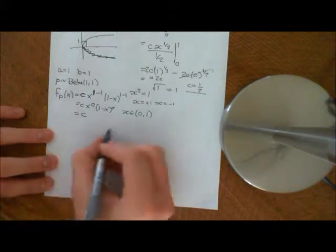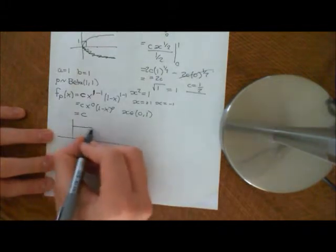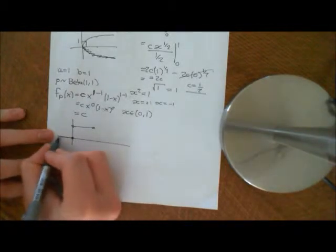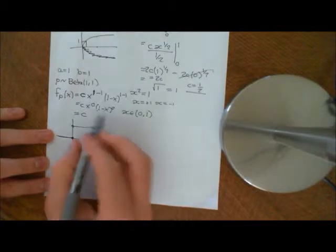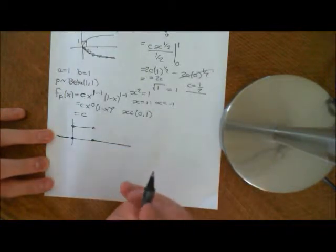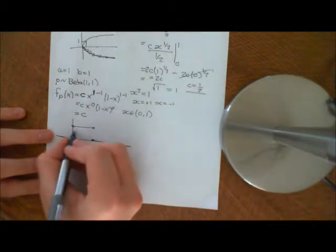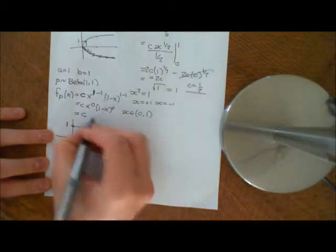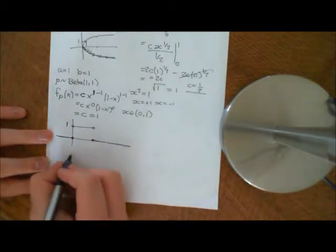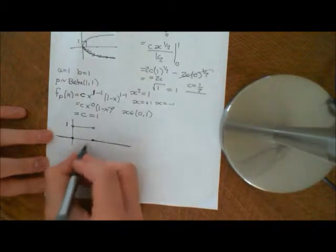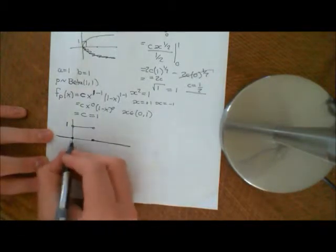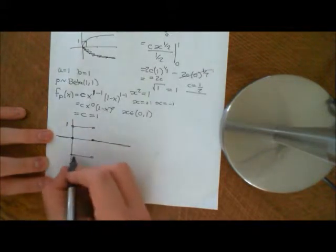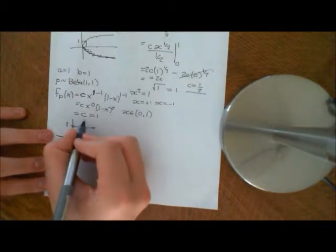Our probability density function therefore looks like a constant on the open interval 0 to 1, and then it's equal to 0 elsewhere, so it looks like a rectangle. Now, what constant integrates to 1? The integral is going to be the area of that rectangle, and we need to make the height equal to 1. If we made it negative 1, the integral would ascribe a negative area to that because it's under the x-axis. So c strictly has to be 1.